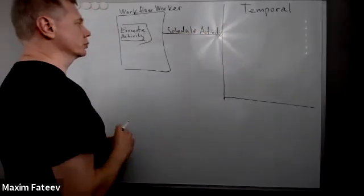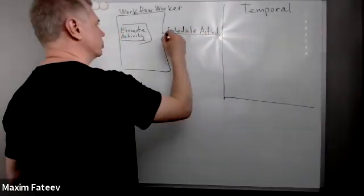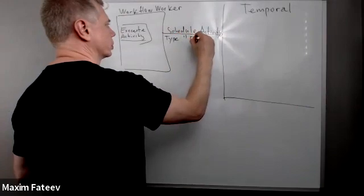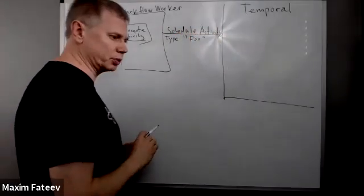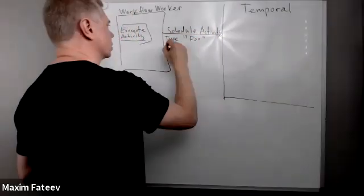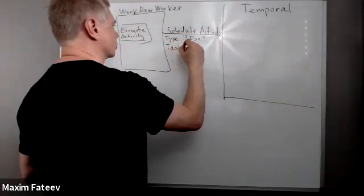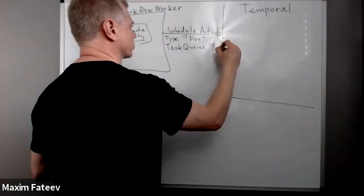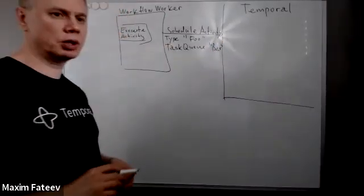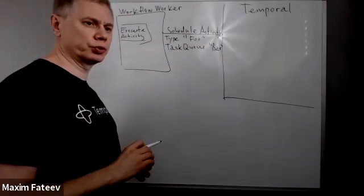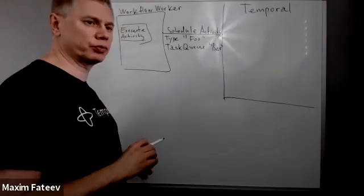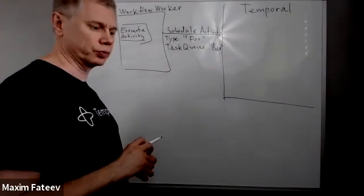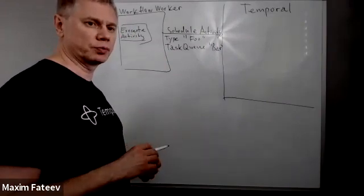When we schedule an activity we always have to specify at least two things: activity type — let's say it will be 'foo' in our case — and the required parameter is activity task queue, let's say 'bar'. Even if you don't specify the task queue explicitly it is always there, usually defaulting to the same name as the workflow task queue. Besides, activity and workflow task queues are separate inside the server, so even if you use the same name they are absolutely different instances of queues.